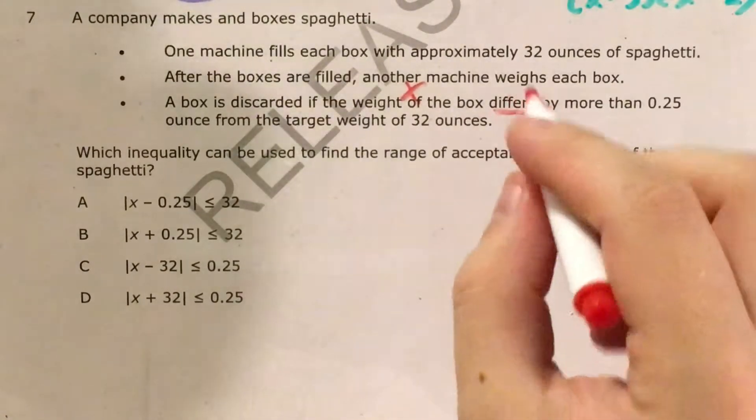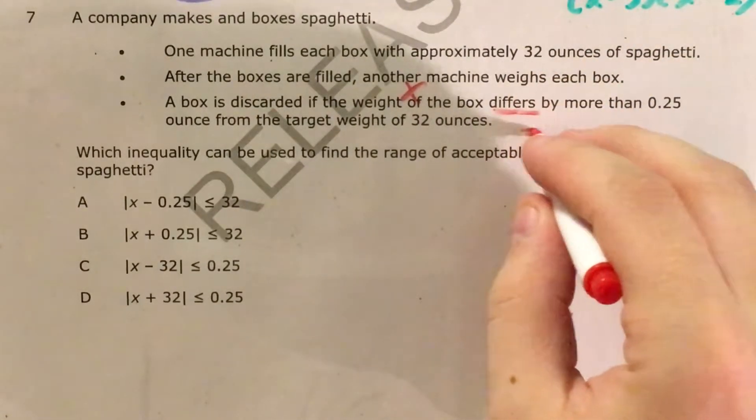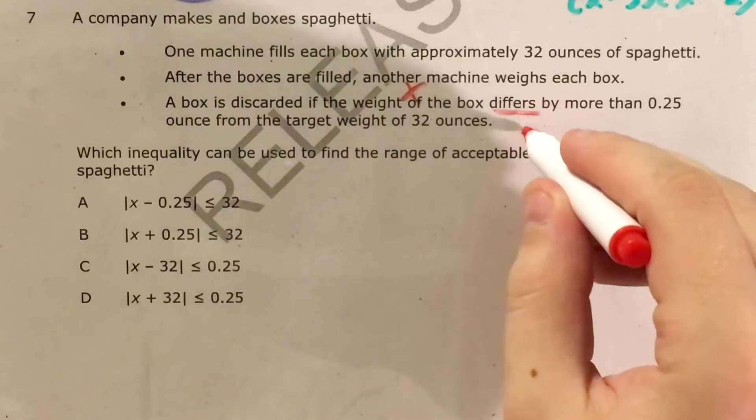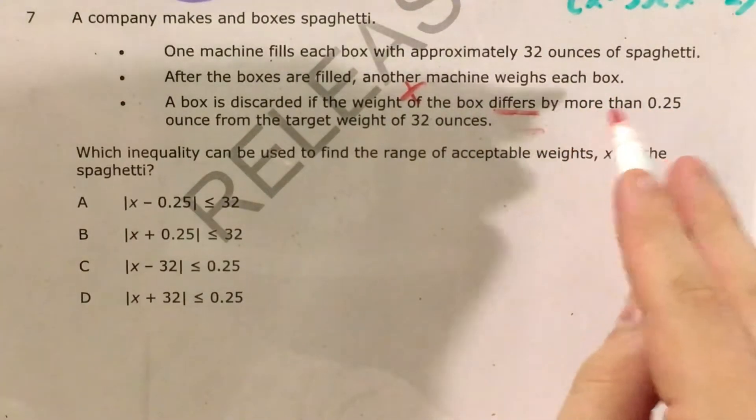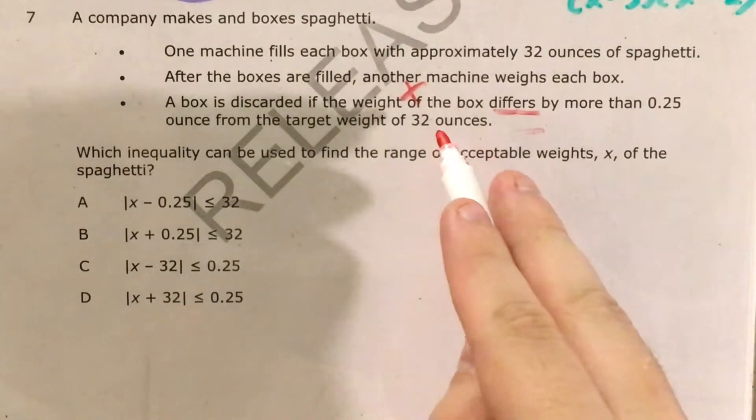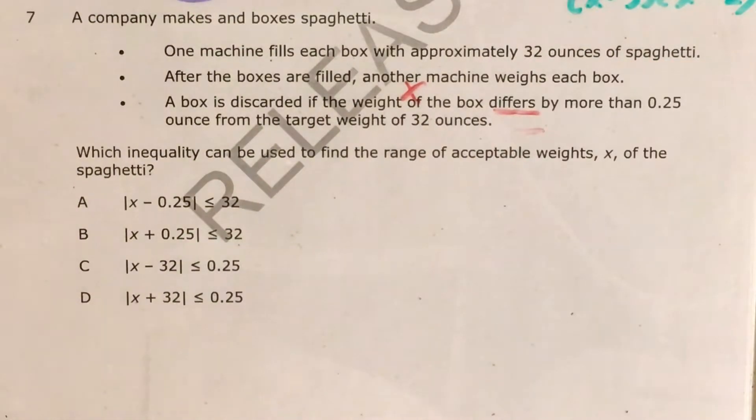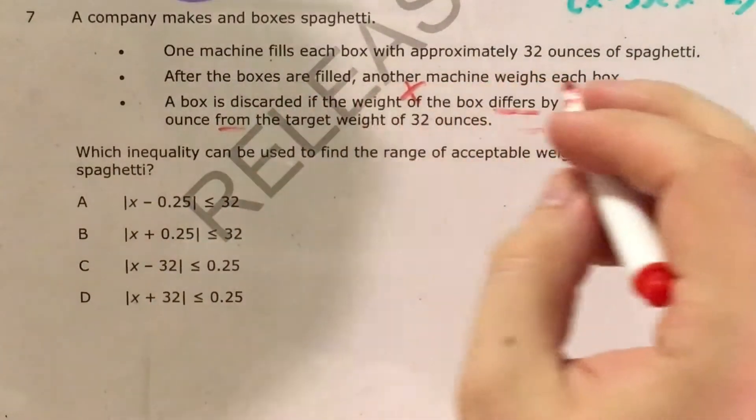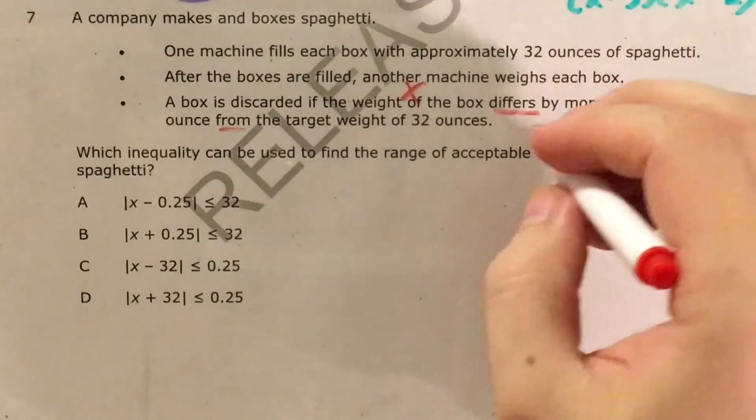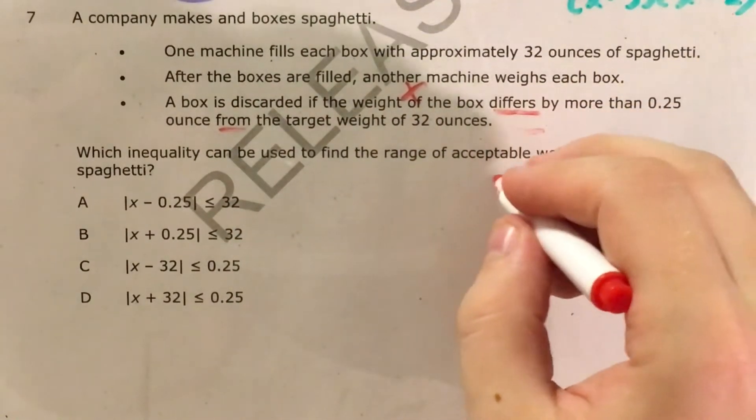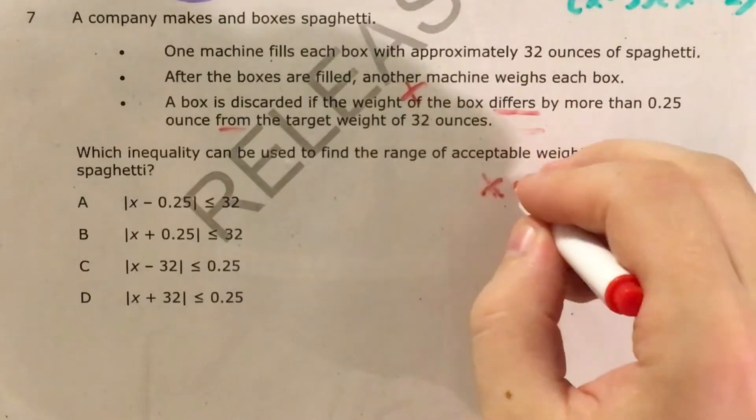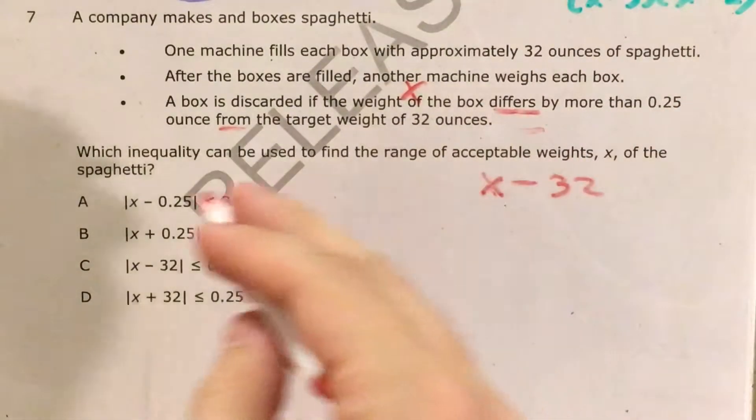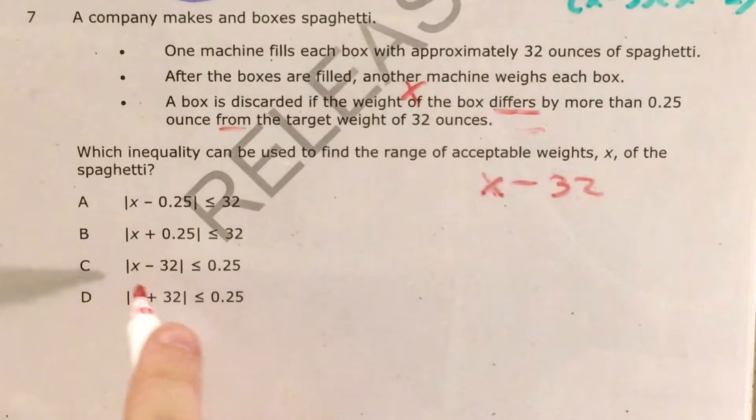Whenever I see the word differs or difference, that tells me I'm subtracting. There are two numbers here: quarter of an ounce or 32 ounces. To figure out which number goes with that, I look at the word from. It differs from 32 ounces, which tells me my answer should have the expression x minus 32 in it somewhere, and the only answer choice that has that is choice C.